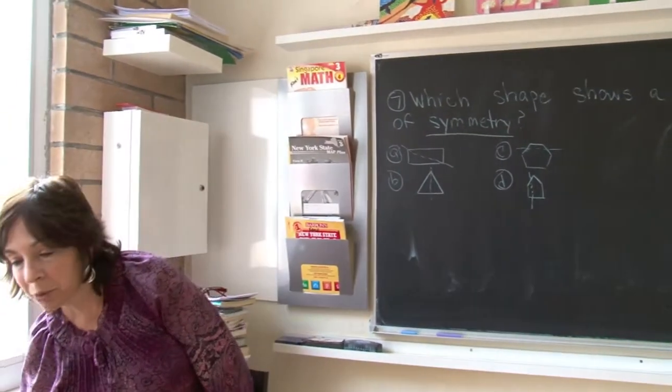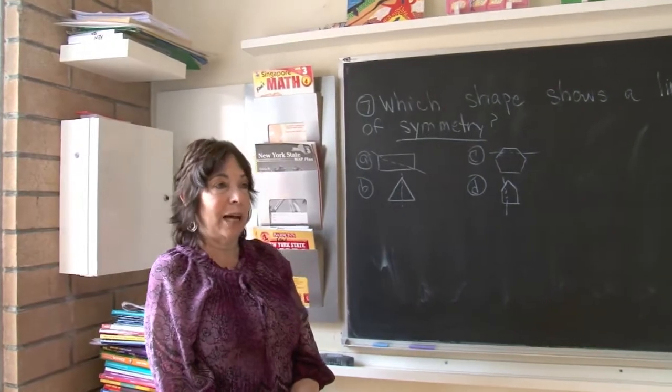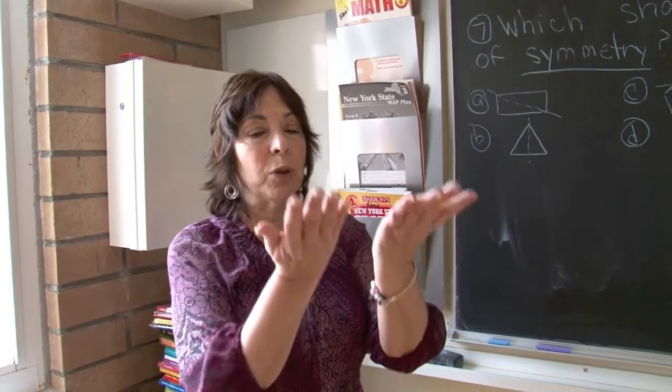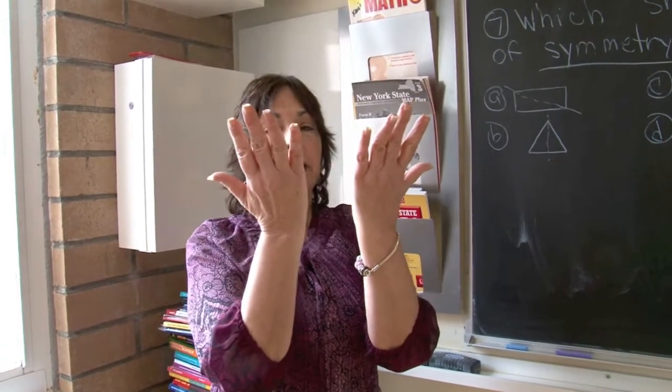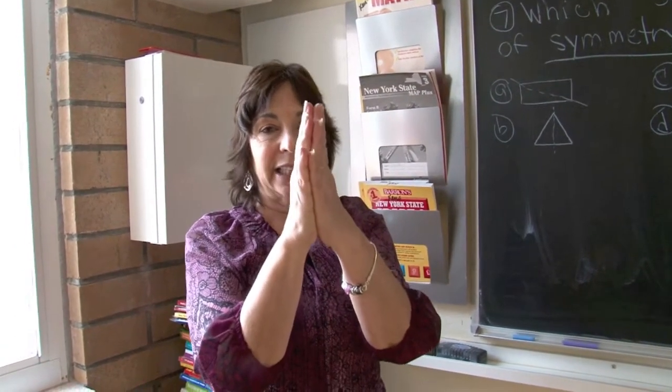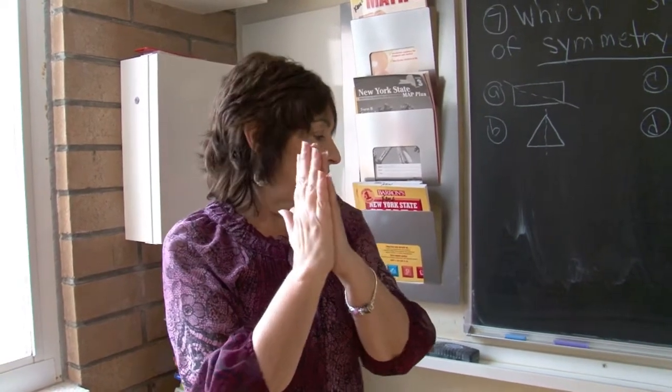A line of symmetry means if you flip over an object, it will be exactly the same. You could flip and match. So if I take my two hands and I flip them over, they match exactly.